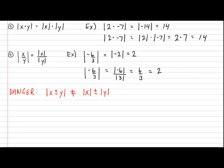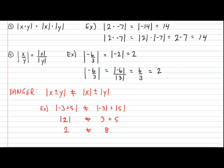Here's a very quick example to prove that this will not always work. Suppose I ask you to calculate the absolute value of negative 3 plus 5. I'm going to prove that this does not equal the absolute value of negative 3 plus the absolute value of 5. On the left side, when we simplify, we get the absolute value of 2, which equals 2. On the right side, when we simplify, we get 3 plus 5, which equals 8. You can see very clearly that the left side does not equal the right side. So be very careful about this particular danger. And that's it — that's all there is to the properties of absolute value.